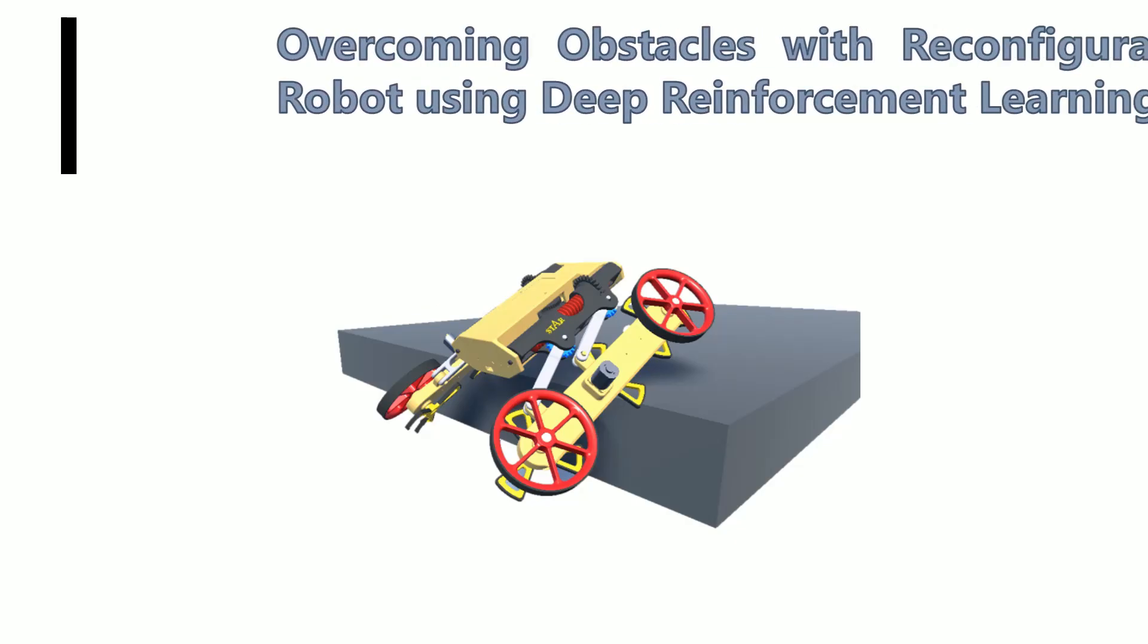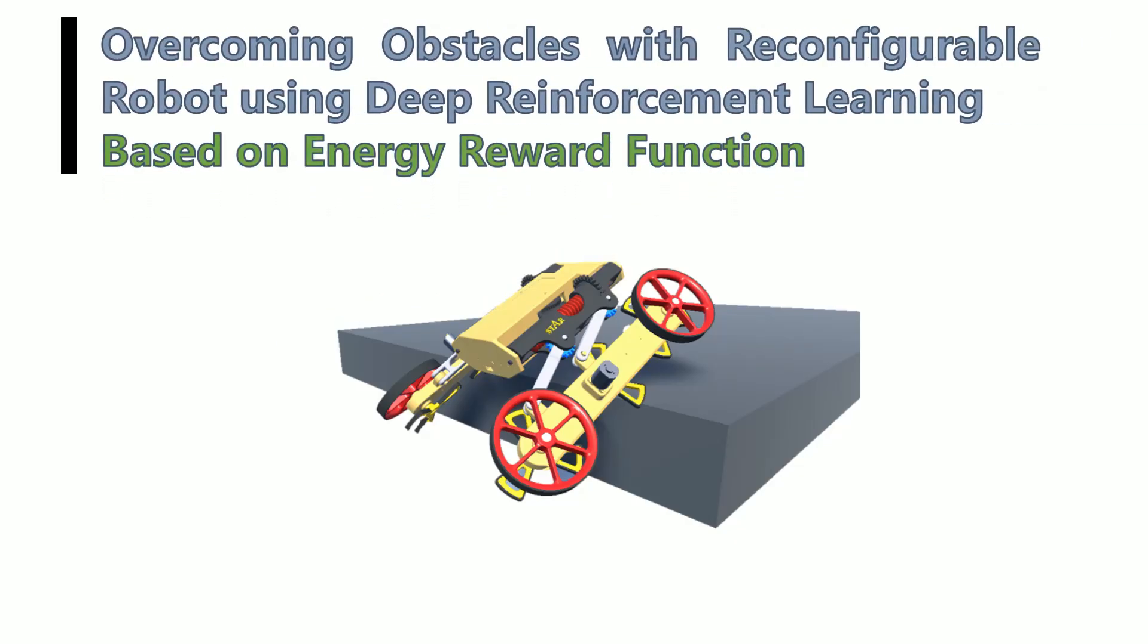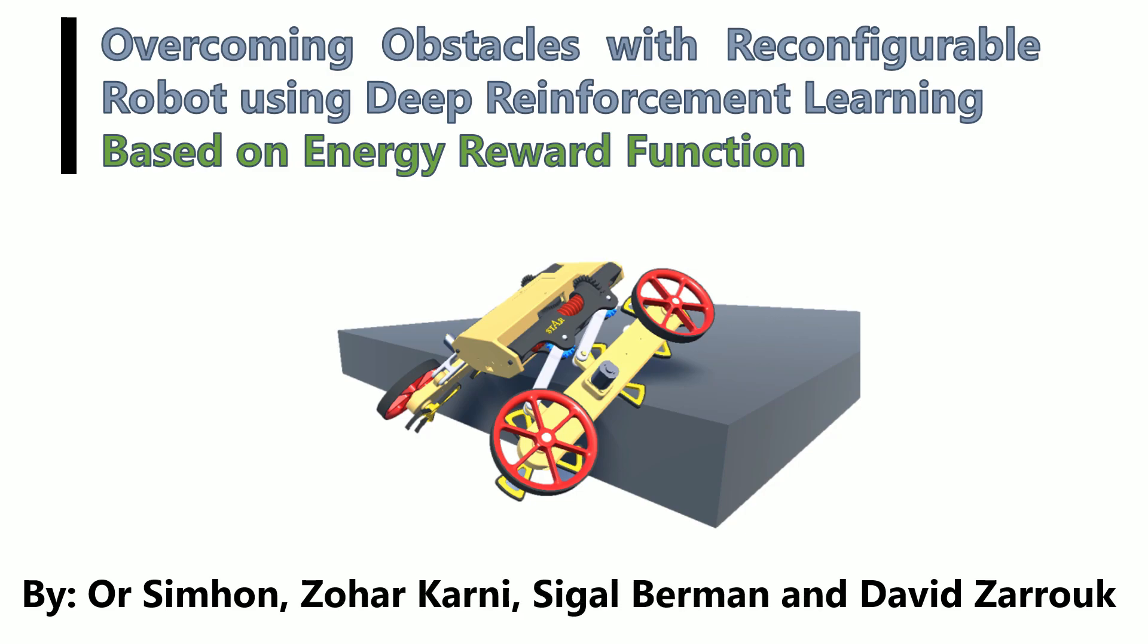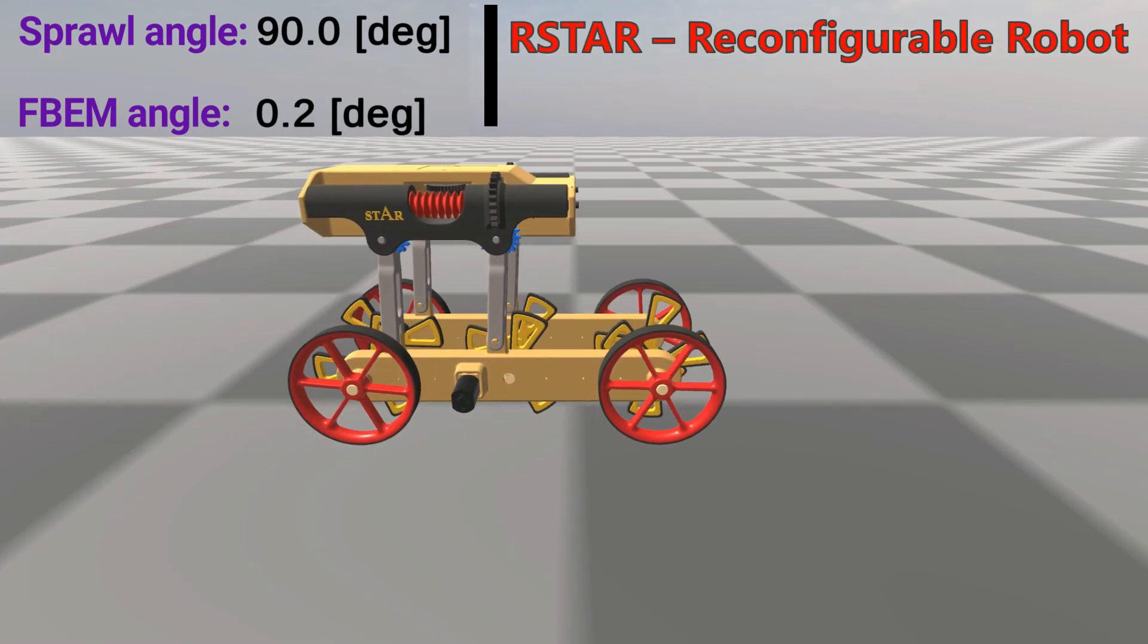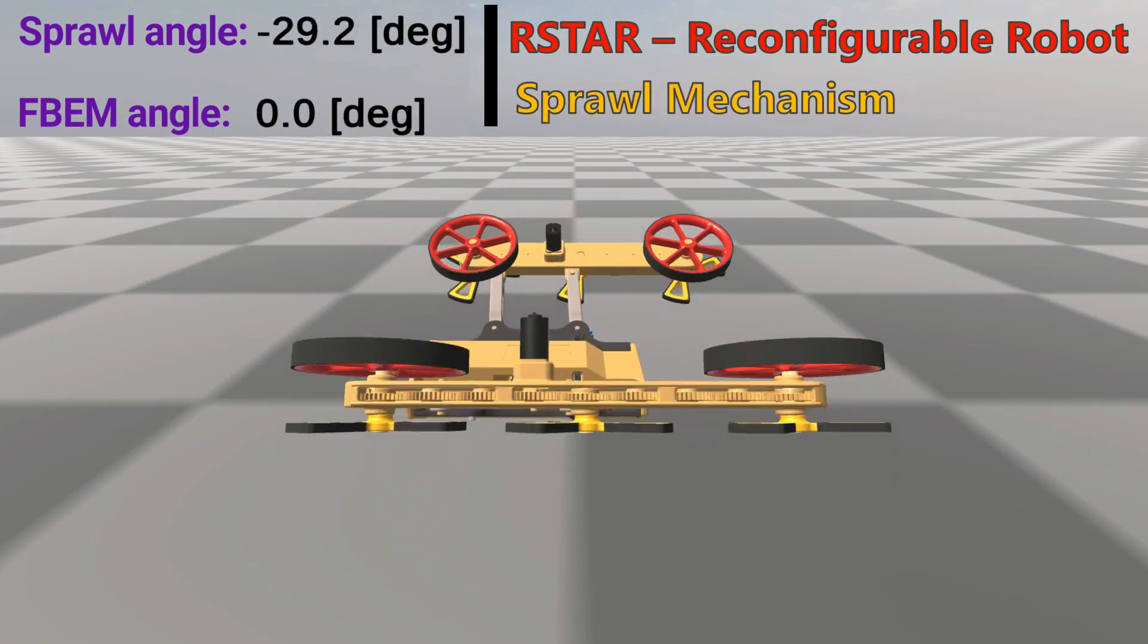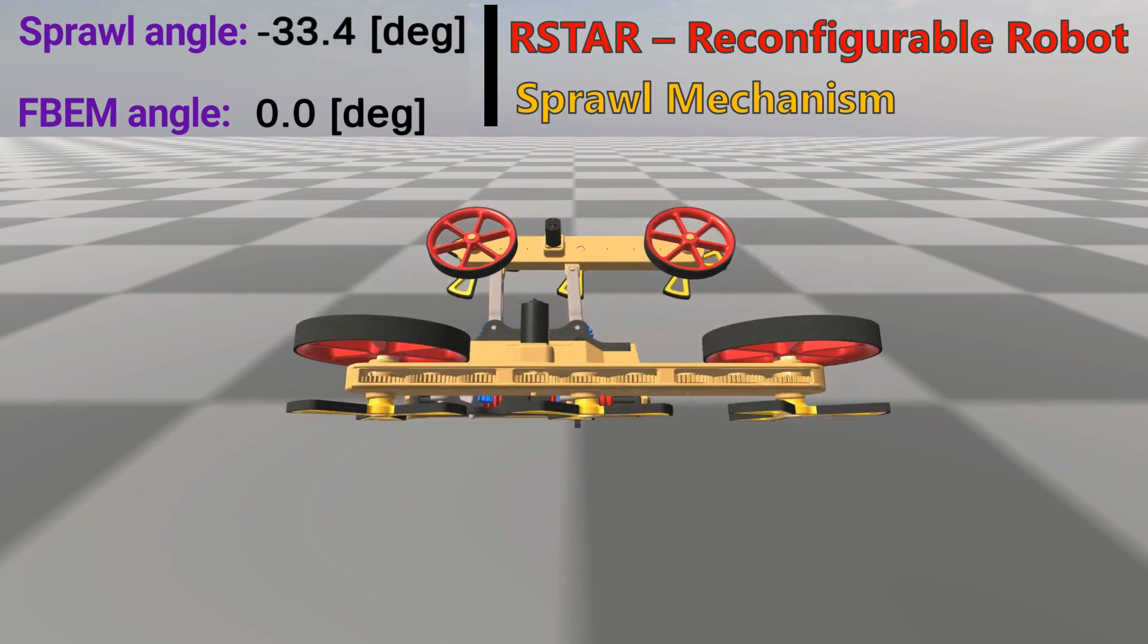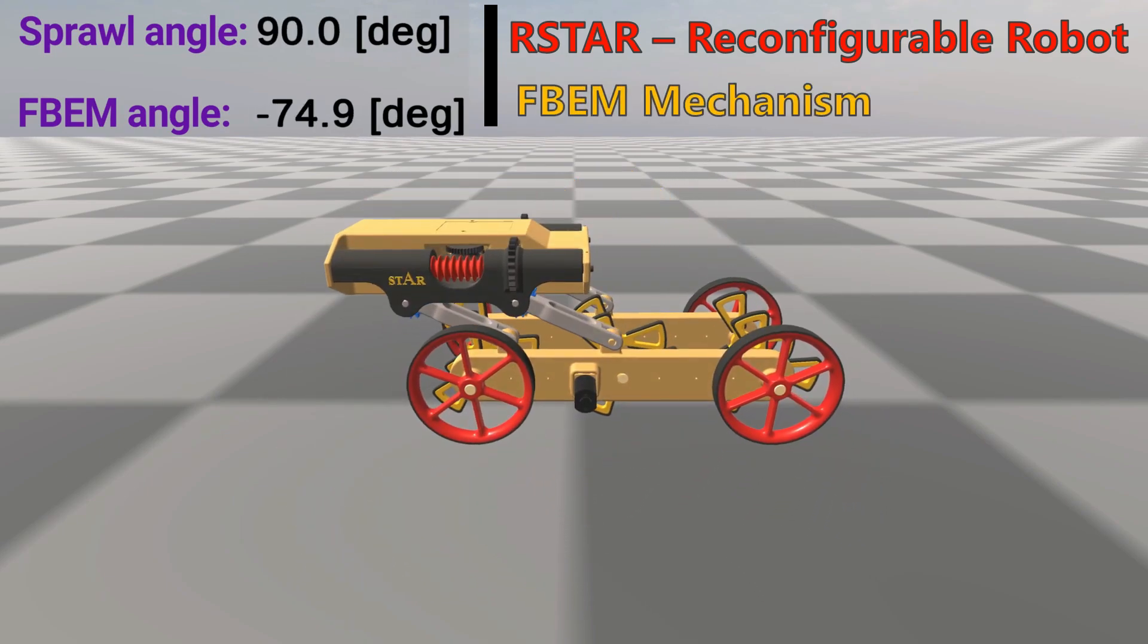Overcoming obstacles with reconfigurable robot using deep reinforcement learning based on energy reward function. The R-Star is a crawling robot capable of reconfiguring its shape and moving the location of its center of mass using a sprawl and a four-bar extension mechanism.